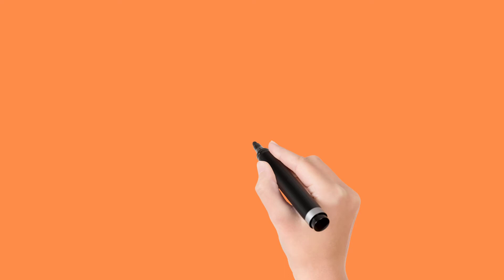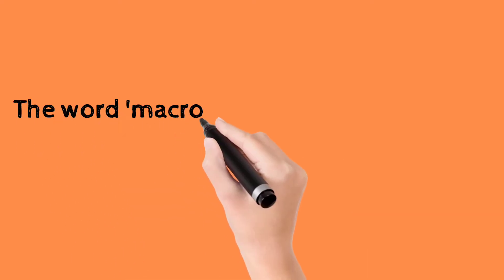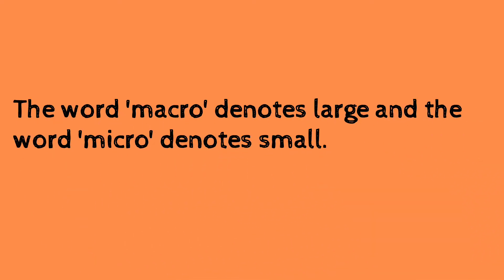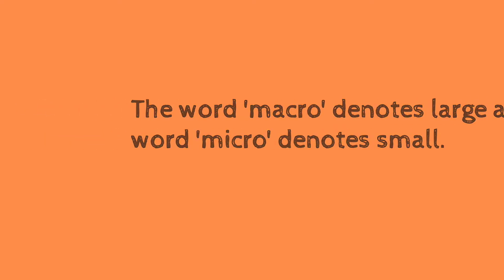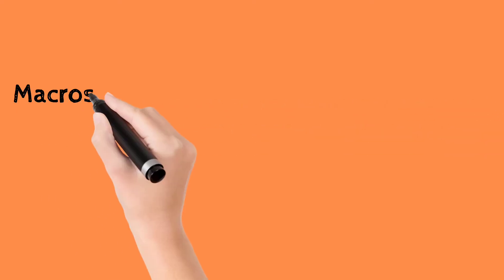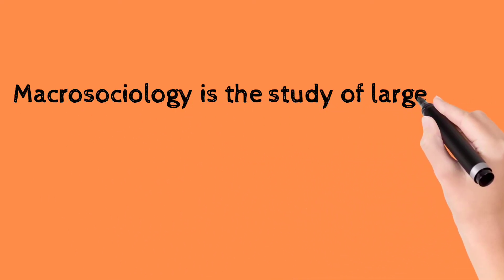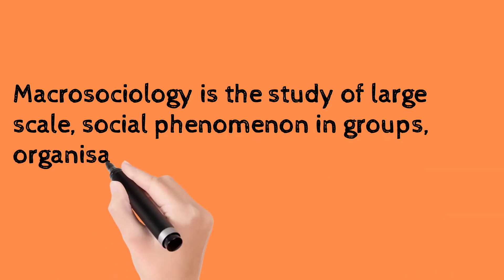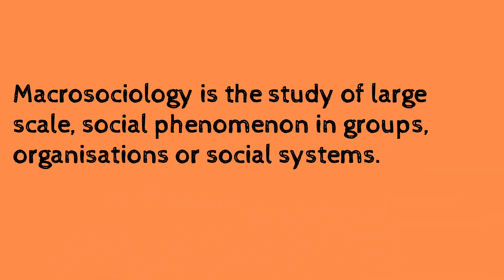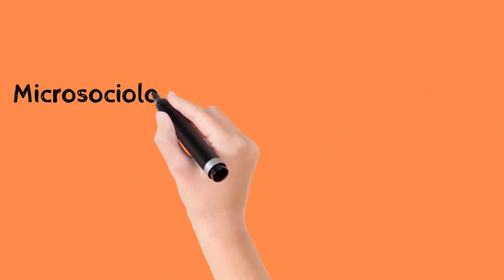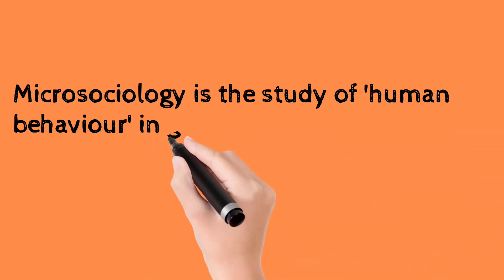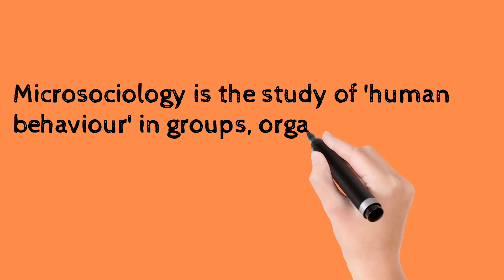To begin with, the word macro denotes large and the word micro denotes small. 1. Macrosociology is the study of large scale social phenomena in groups, organizations or social systems. 2. And microsociology is the study of human behaviors in groups, organizations or social systems.